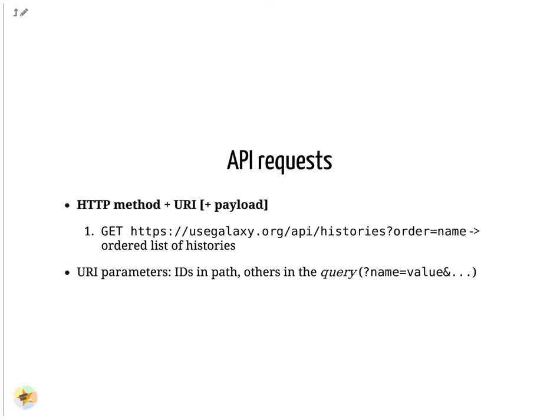Let's see some examples of possible API requests to a Galaxy server. In the first example, we use the GET method to retrieve a resource, in this case the list of histories. The URI starts with the protocol and address of the server, followed by the resource we are interested in — the histories. A URI may then include an optional query, preceded by a question mark, containing a sequence of request parameters specified as key=value and separated by ampersands. In this example, the query is used to ask that the list of histories is ordered by name.